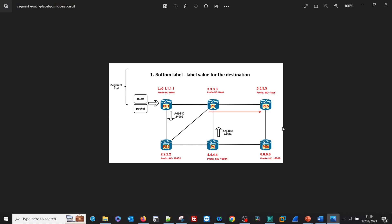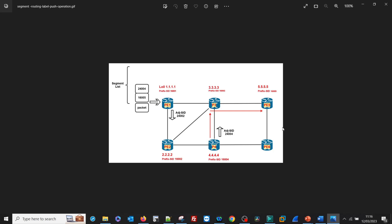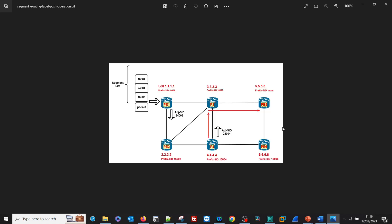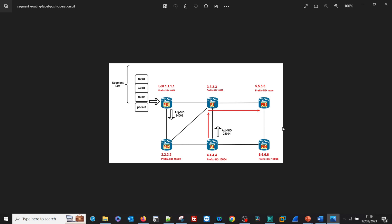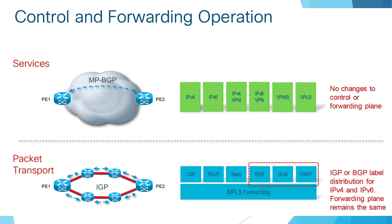This is how labels are pushed on packets. 16005 is the label for PE5. Then we need to cross the link between PE4 and PE3, so the adjacency SID for PE4 is 24004. Then we need to identify which router is going to push that adjacency SID — that is PE4 — so we need to put the prefix SID for PE4, which is 16004. Then we need to cross the link between PE1 and PE2, hence the adjacency SID 24002. That is what segment routing is called as source-based routing.